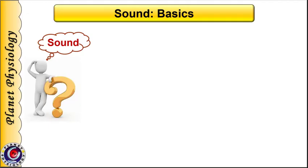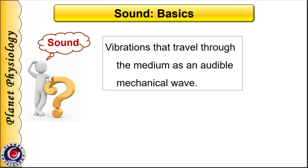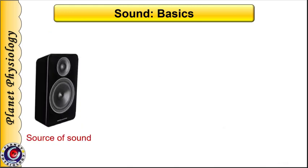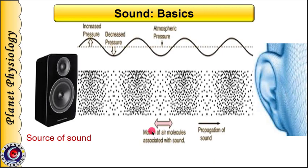What is sound? In simple terms, sound is the sensation produced when vibrations travel through the medium as an audible mechanical wave. These vibrations are produced by any vibrating source. The vibrating source causes molecules in the surrounding medium to vibrate, and these molecules in turn set vibrations in the neighboring molecules, passing it on further. Thus it produces alternate regions of compression and rarefaction in the medium. Regions of compression are high pressure areas and rarefaction are low pressure areas, and these are plotted as the waveform as shown here.